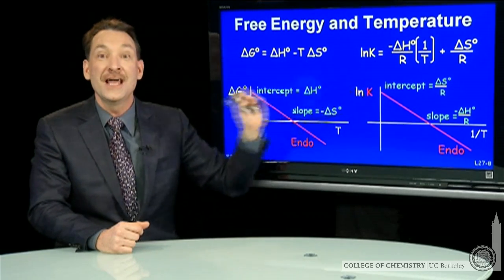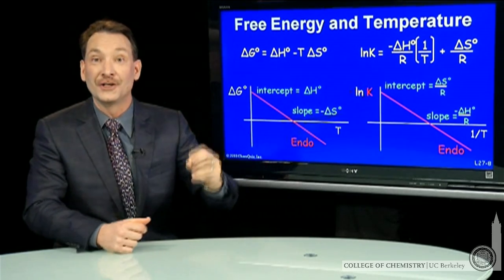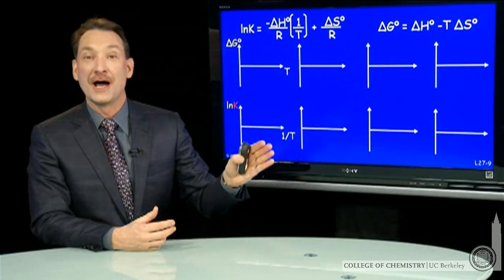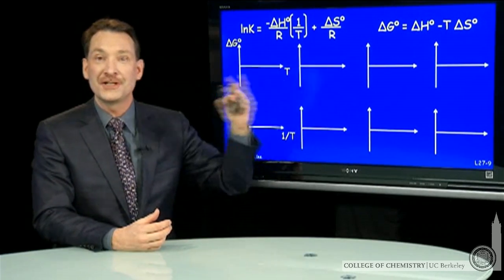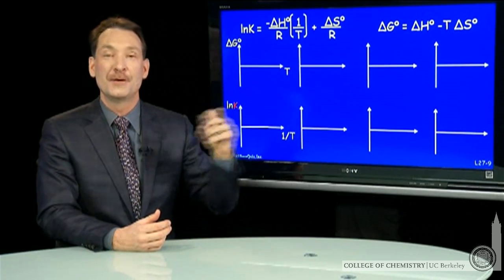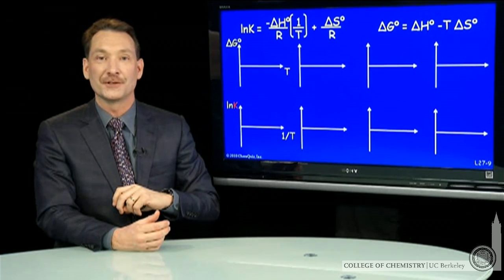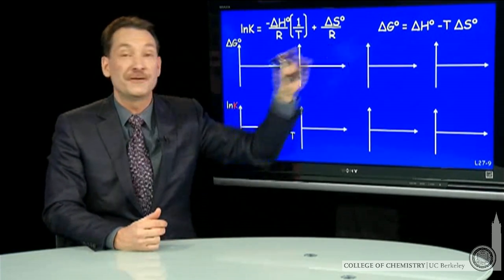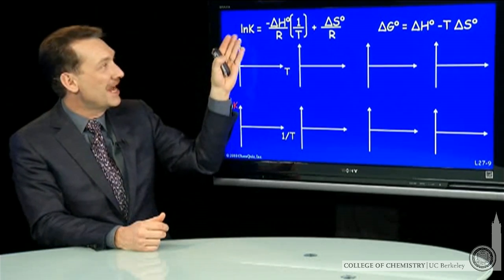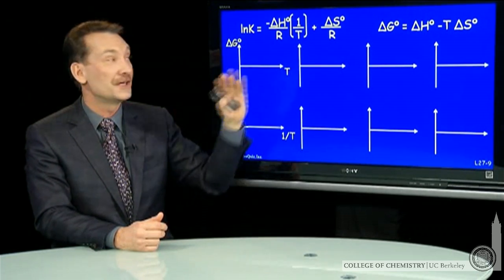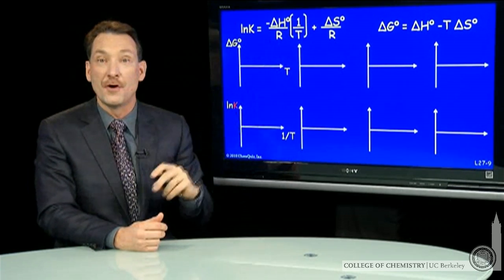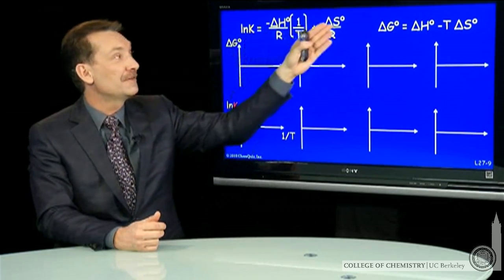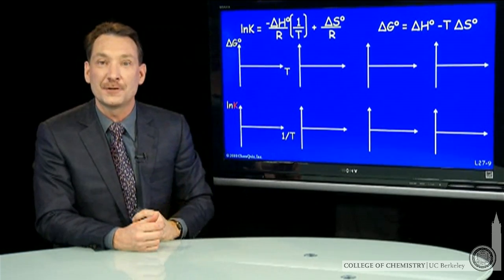Delta G versus T gives useful linear plots. Let's summarize the relationship between the free energy and temperature and the equilibrium constant and temperature. We can plot them both in a linear fashion if we plot the free energy versus temperature directly and natural log of the equilibrium constant versus 1 over temperature. There are a couple of situations to consider depending on the relative sign of the enthalpy and the entropy.